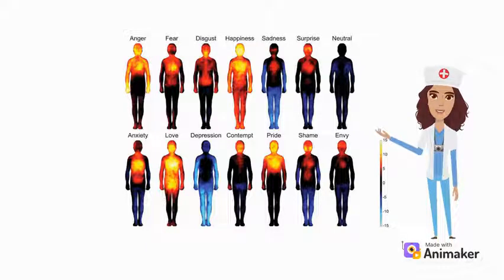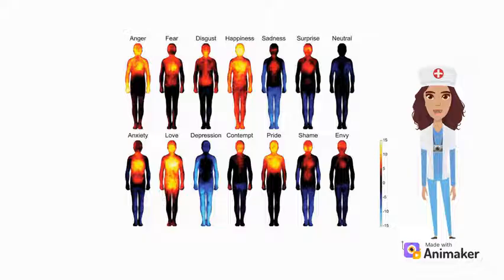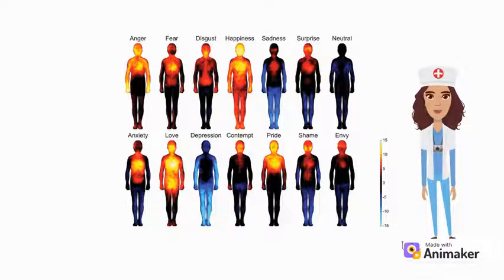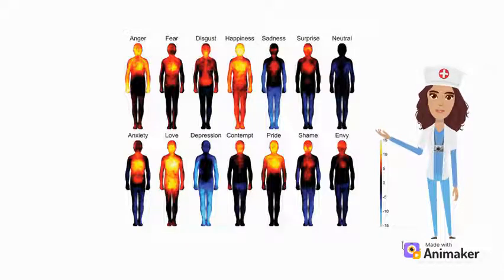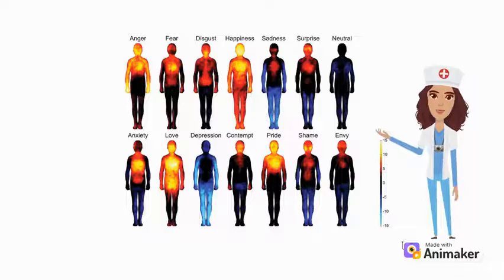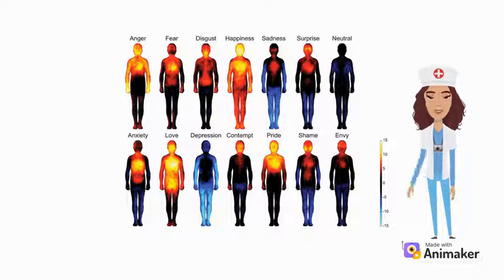Damage to the left lobe can cause difficulty with functions related to symbols such as language, mathematics, and writing. But damage to the right lobe may lead to difficulty with images, spatial awareness, movement, and the ability to visualize and create.